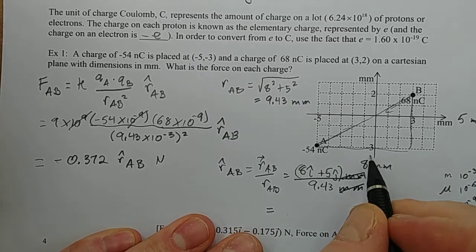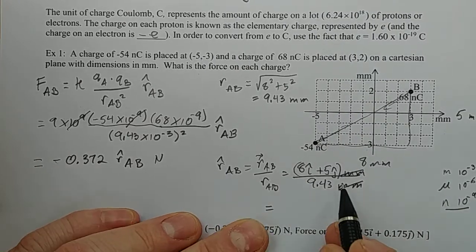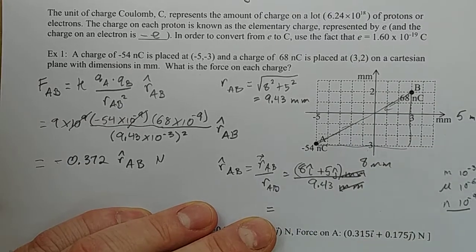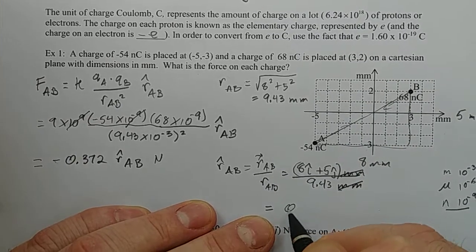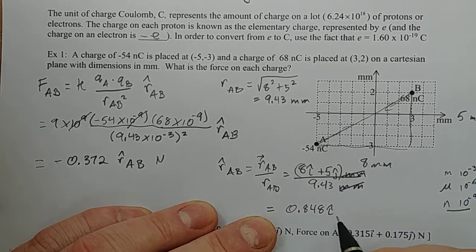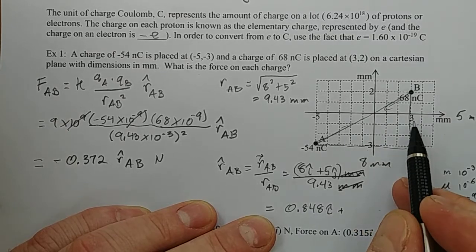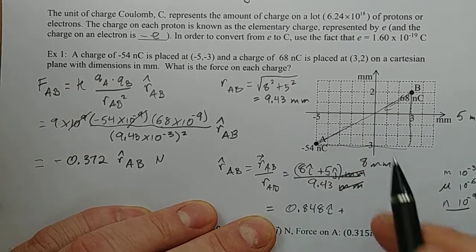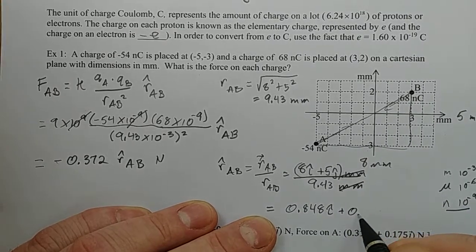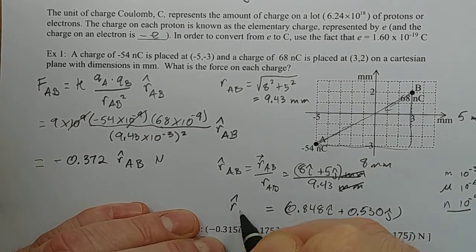Which is also just another way of saying adjacent over hypotenuse. So you could just do it that way. You don't necessarily need to write all this out. You could just say we're going to multiply it by adjacent over hypotenuse, which is 8 divided by 9.43, which is 0.848 i hat to get the x component. And we're going to use opposite over hypotenuse to get the y component. So we're going to do 5 over 9.43, which is 0.530 j hat. And that is r hat from A to B.